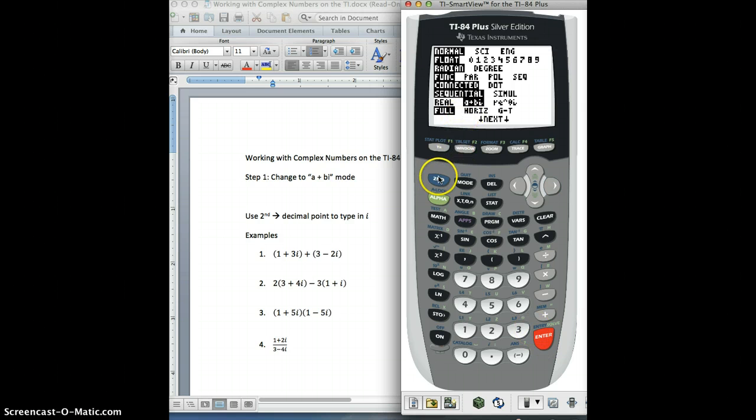So now it's highlighted. I can hit second, quit, to get back to the main screen, and now it's as easy as this. What you have to realize is down here, right above the decimal point in blue, which means we're going to hit second in order to use this, it says I. That's for the imaginary number.